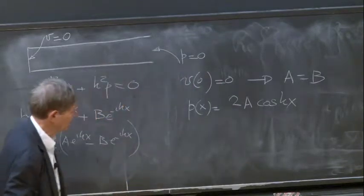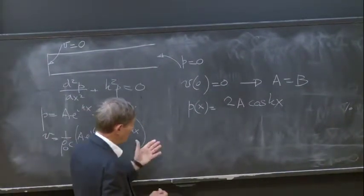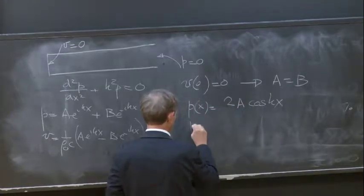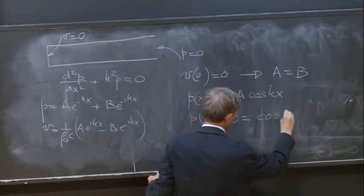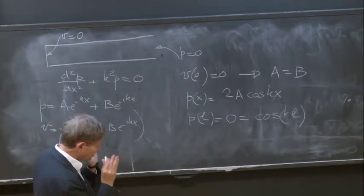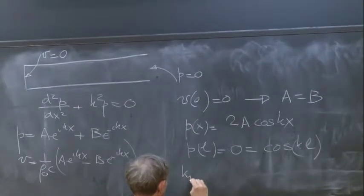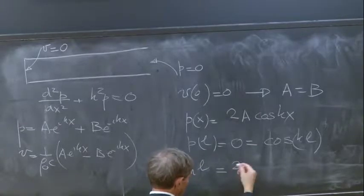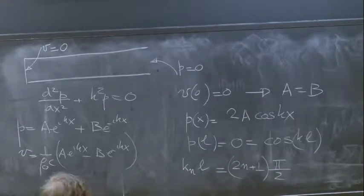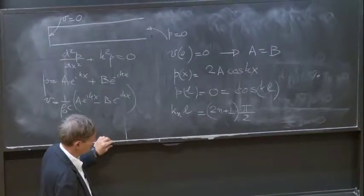With A equal to B, the pressure becomes p(x) = 2A cos(kx). Now we must satisfy p(L) = 0, so cosine(kL) = 0. This can only be satisfied for certain values of k: specifically, k_n L must equal an odd multiple of pi over 2 — that is, pi/2, 3pi/2, 5pi/2, and so on.